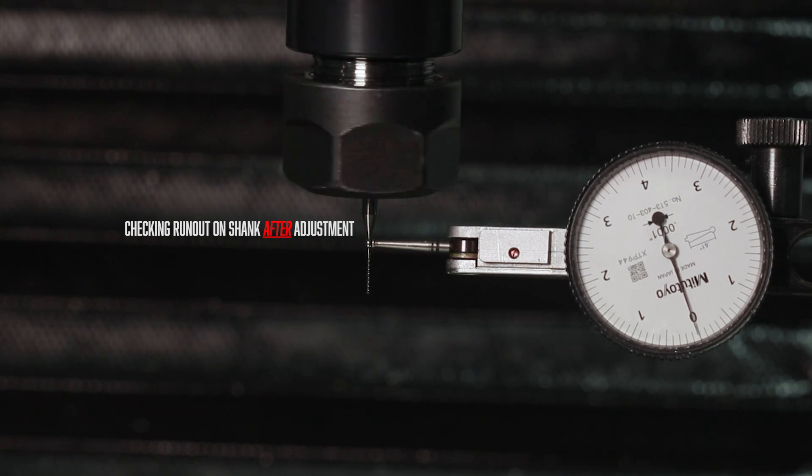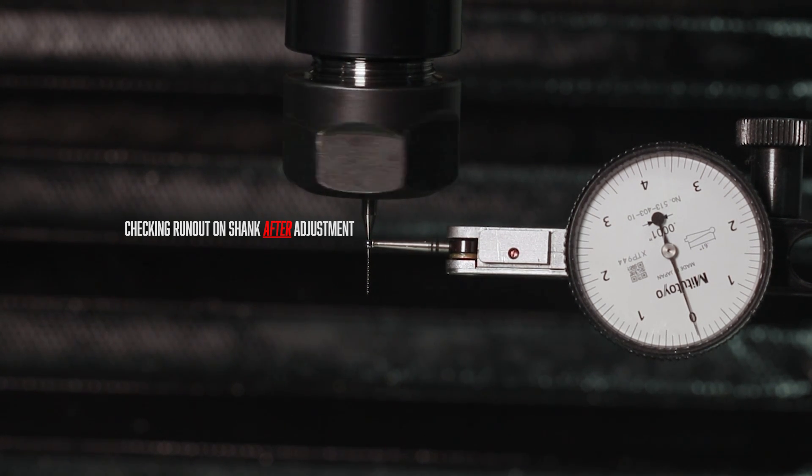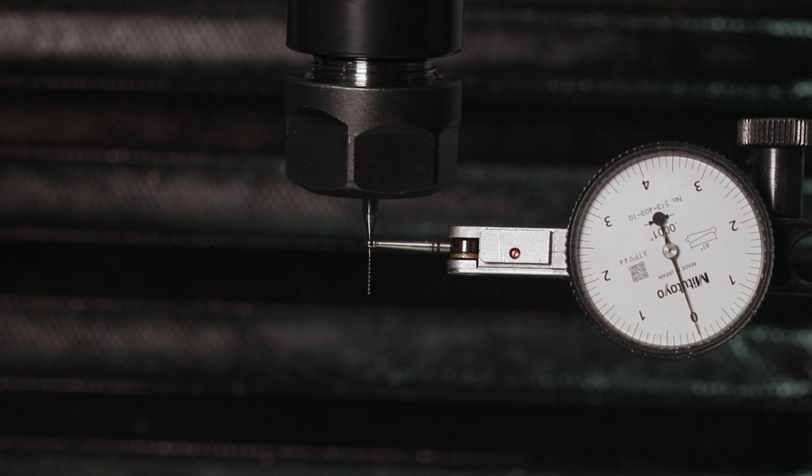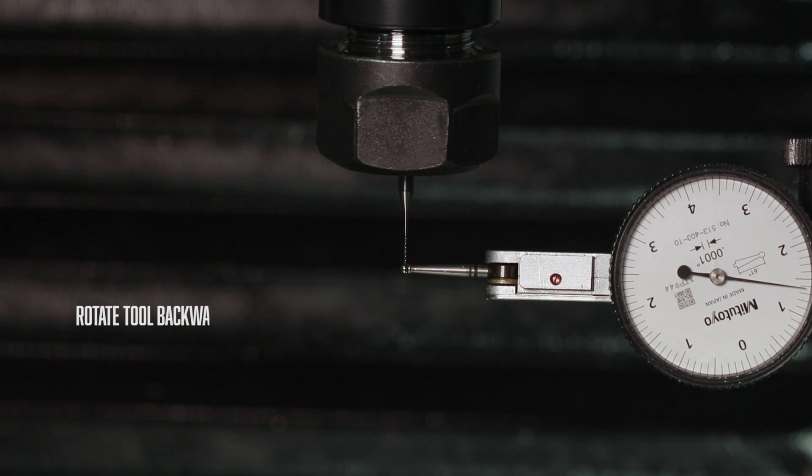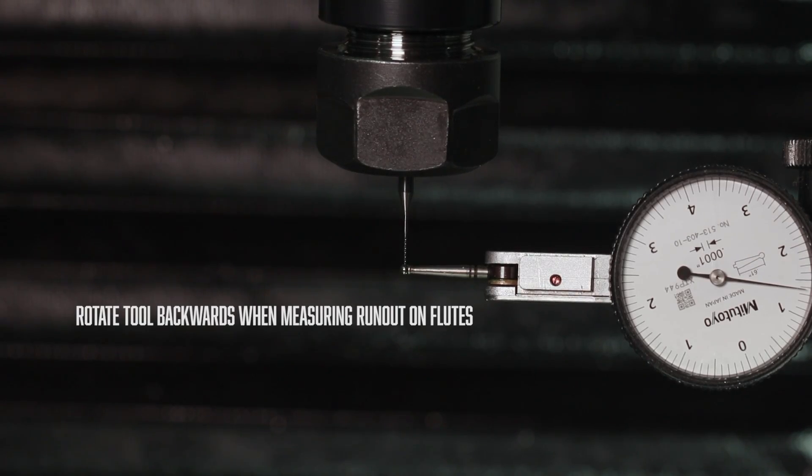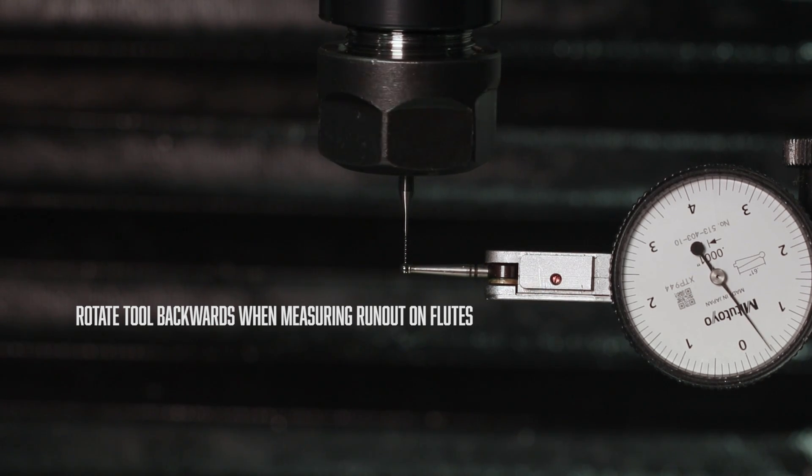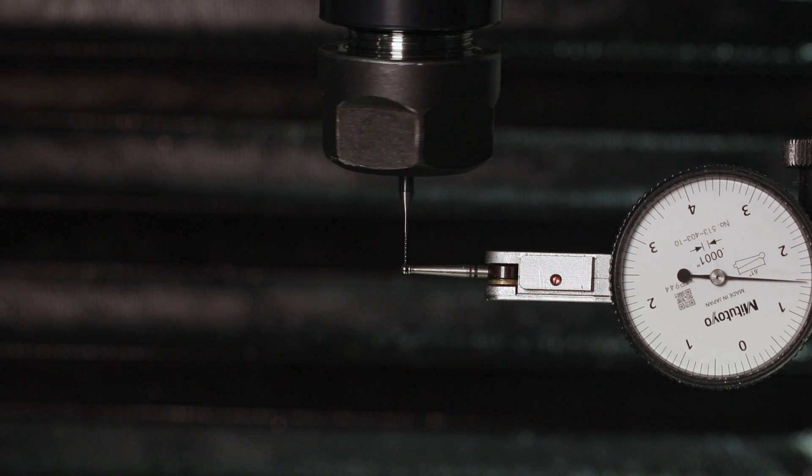One of the biggest things with these two tools was the shank diameter and that played a big part in the runout. With the Harvey tool being a reduced shank with an eighth inch shank it was much easier to find a collet that was going to hold the tool nice and straight and when I had to adjust the runout I had a good amount of shank to tap it.